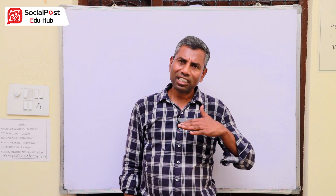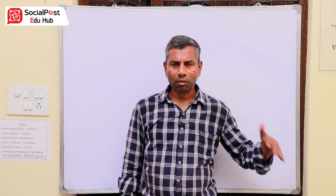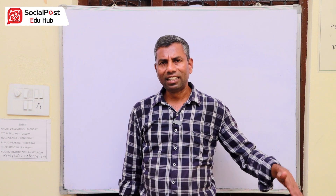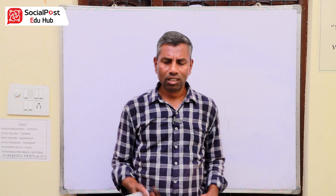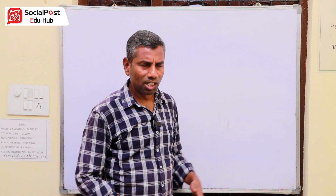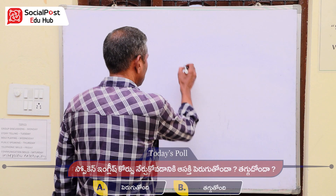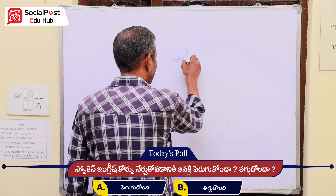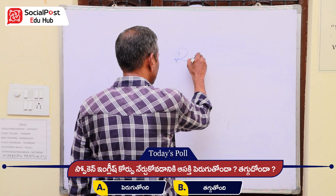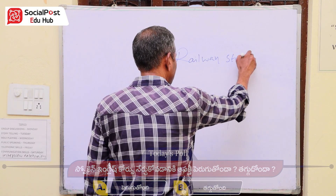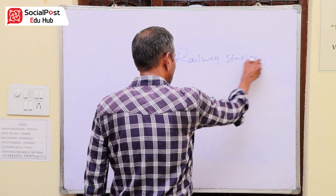We are going to talk about this activity. We are talking about the present continuous. How do you do it? For example, we have a railway station.